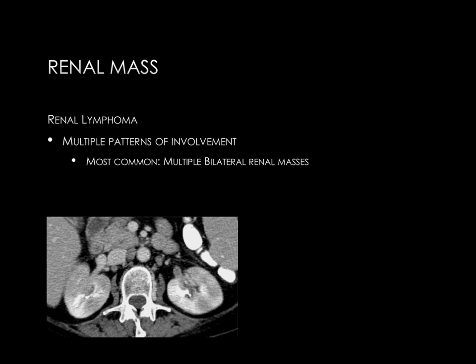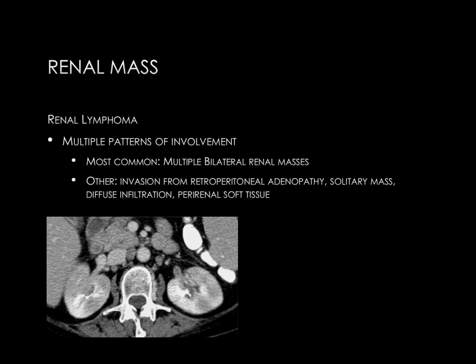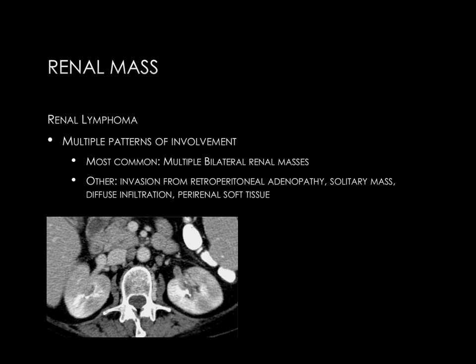Finally, we'll discuss the appearances of renal lymphoma. There are multiple patterns of renal lymphoma involvement. The most common is multiple bilateral renal masses. The CT image demonstrates multiple rounded areas of hypo-enhancement in the renal cortex compatible with multiple bilateral masses. Additional patterns include invasion from retroperitoneal lymphadenopathy, a solitary renal mass, diffuse infiltration, or perirenal soft tissue. Another CT image demonstrates ill-defined retroperitoneal lymphadenopathy compressing the IVC, with lymphadenopathy growing into the right kidney as indicated by the yellow arrowheads.